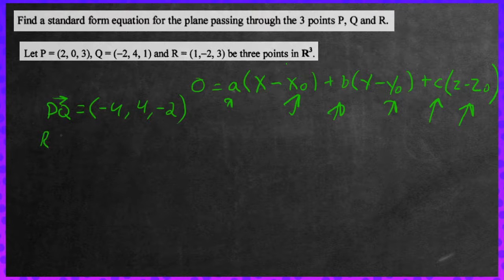Now let's find the vector P to R right there. So let's find that. So it's going to be R subtract P. So 1 subtract 2 is just a negative 1. We have negative 2 subtract 0, negative 2, and 3 subtract 3 is 0.